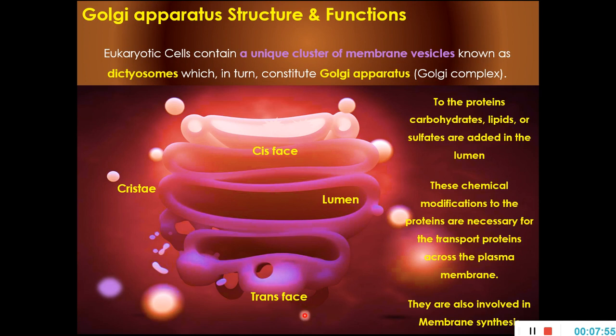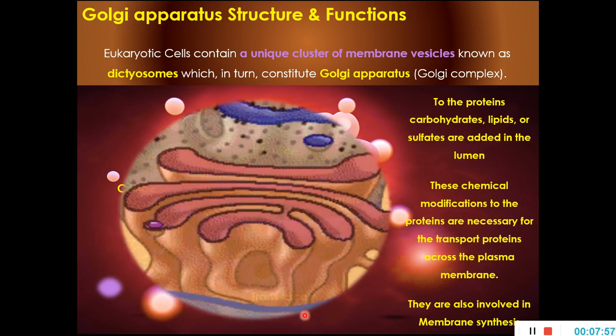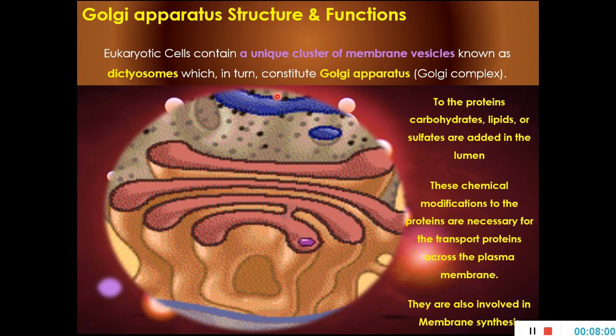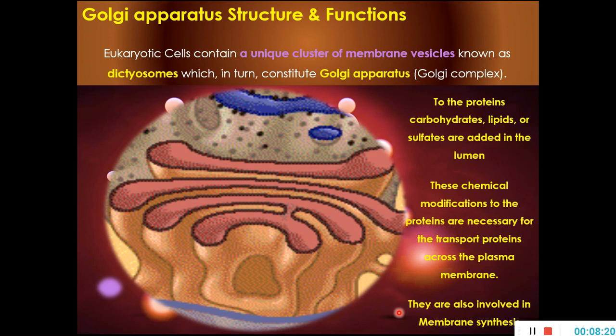In this GIF, proteins are processed on the rough endoplasmic reticulum, then move to the Golgi apparatus where they are modified and packaged in the lumen. After packaging, a vesicle is formed; these vesicles either remain inside the cell or move out from the cell membrane. Dysfunction of the endoplasmic reticulum or Golgi apparatus can lead to several diseases.